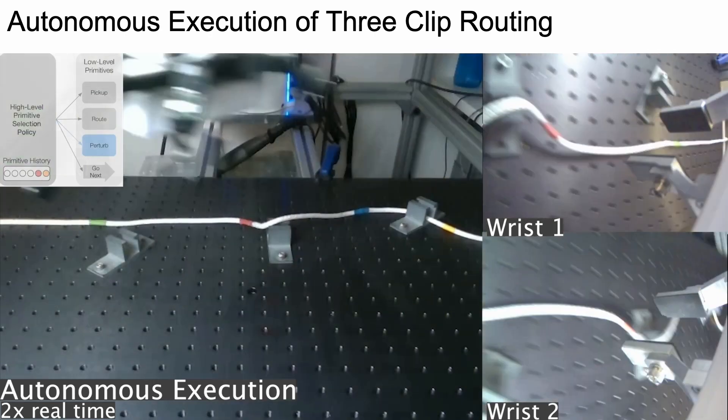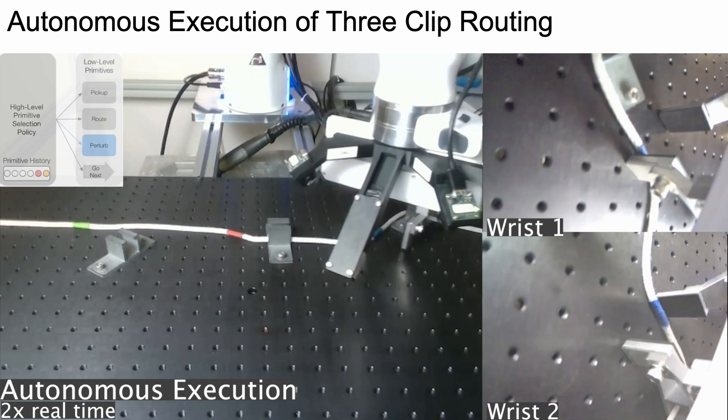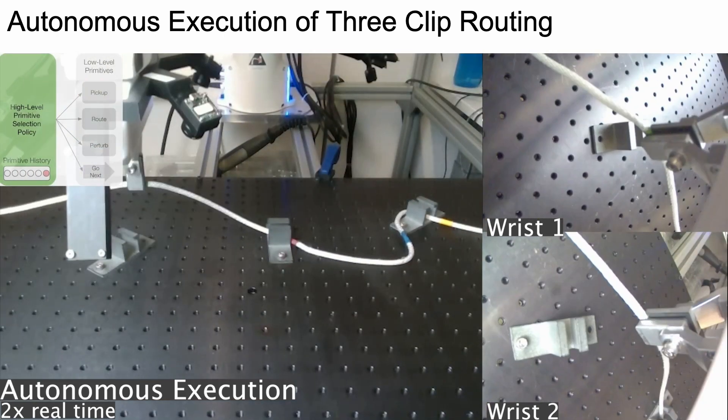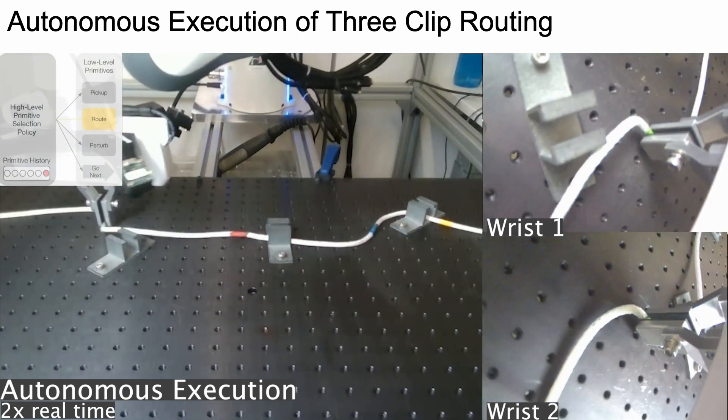Notice that the primitive history updates with the most recent added to the right. Also notice that the history clears once the go-next primitive has been called, indicating that the system is about to route through a new clip independently from the previous.